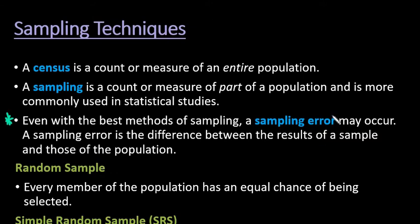A sampling error does not mean that you made a mistake, it simply is the difference between the results of a sample and those of the population. So if I were to go and measure every single adult male in the United States over the age of 18 and find their average height, it's going to be different than if I found the average height of 50 randomly selected males.